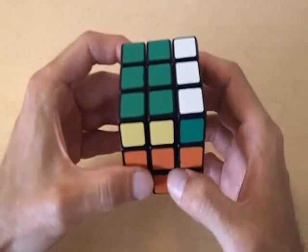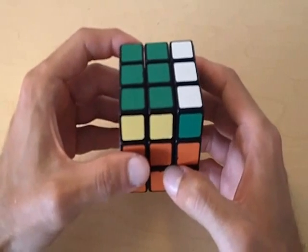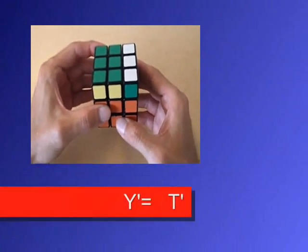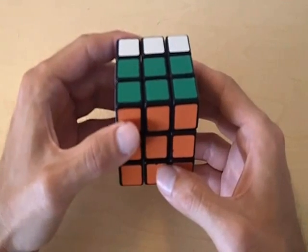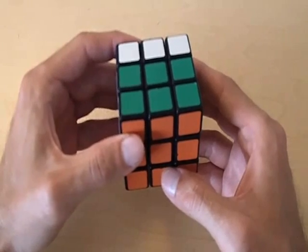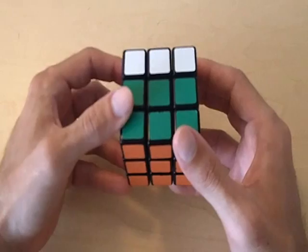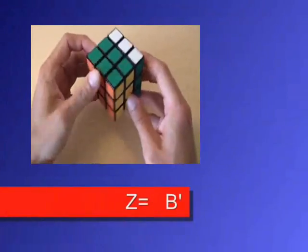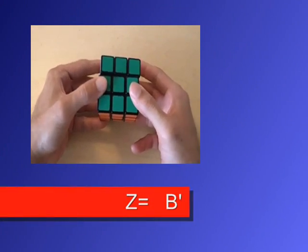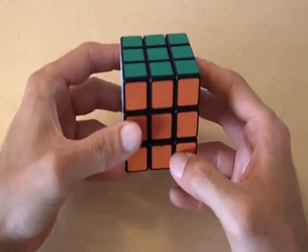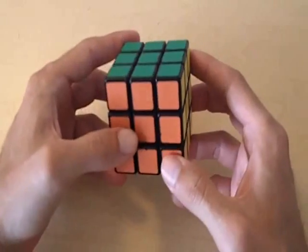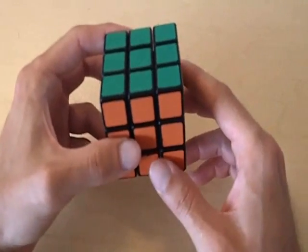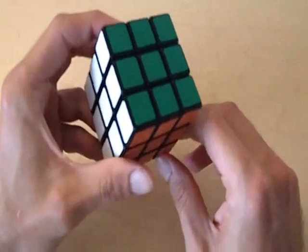Now our next part of the formula is Y prime. Our Y was moving the top side clockwise, so Y prime is going to move the top side counterclockwise. Moving on to Z prime — you can probably figure this out on your own. Our Z was moving the back side, and now I'm going to move the back side back. Now our cube is completely solved. I gave you a better idea of how you can use Z and Z prime so that after you rotate the three pieces, they will all be orientated the correct way.